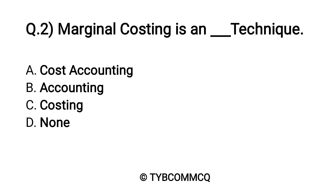Question number two: Marginal costing is a dash dash technique. Option A: cost accounting, Option B: accounting, Option C: costing, and Option D: none. Yes, the correct option is Option C — costing.